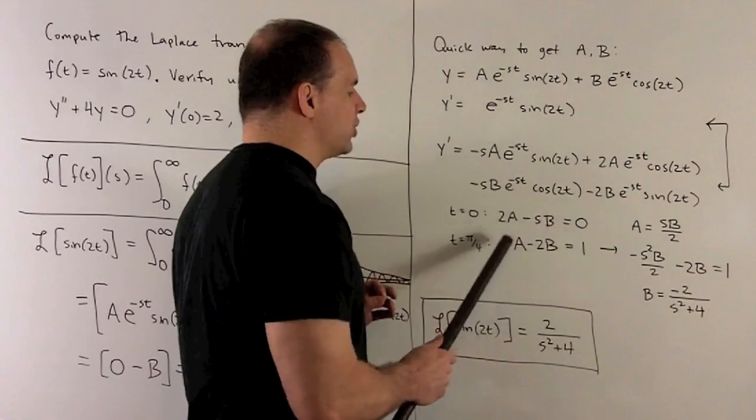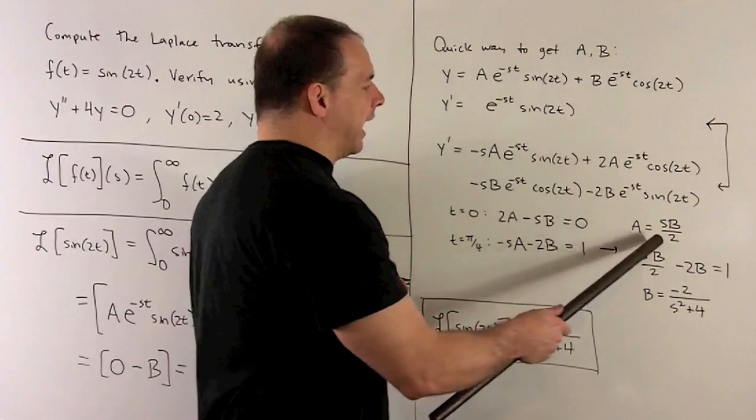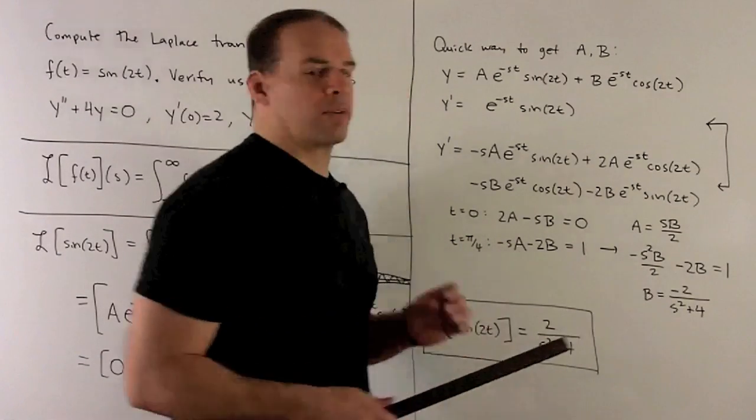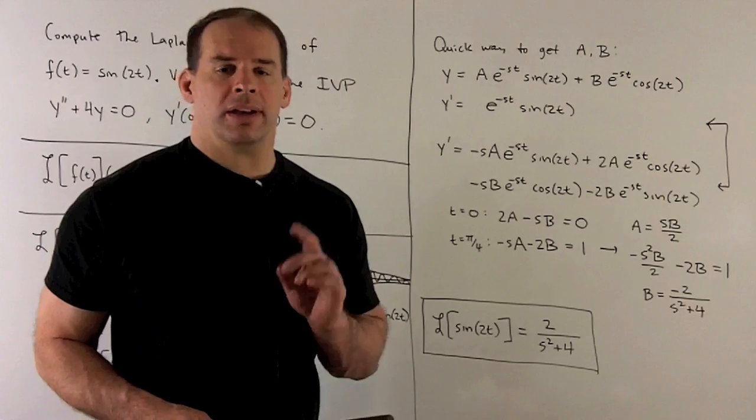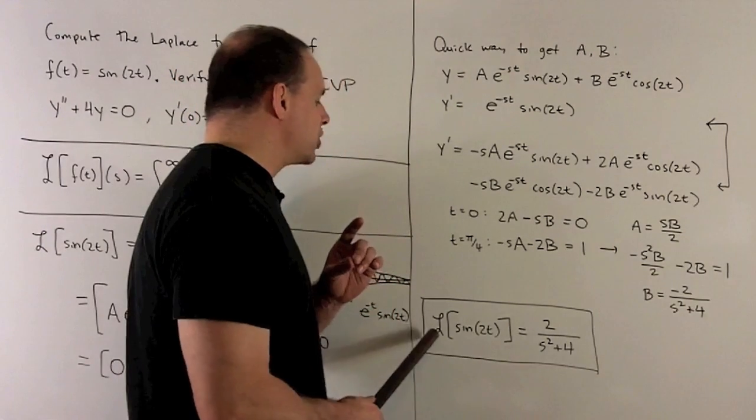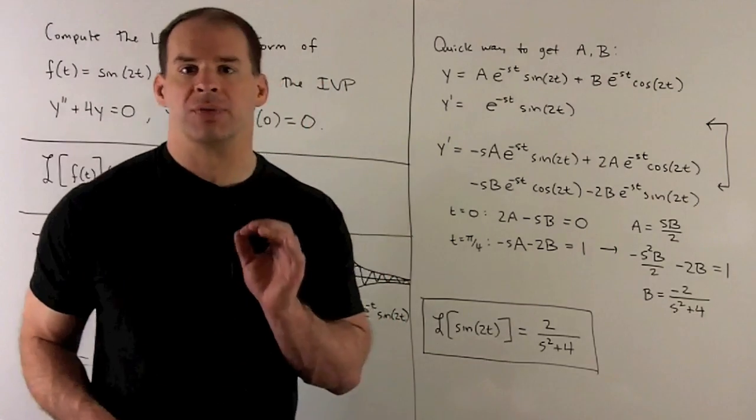I have two equations, two unknowns. We're going to solve first for a, substitute that back in. And then, we'll wind up getting b equals minus 2 over s squared plus 4. The Laplace transform is going to be minus that. So, our answer is going to be Laplace transform of sine of 2t equals 2 over s squared plus 4.